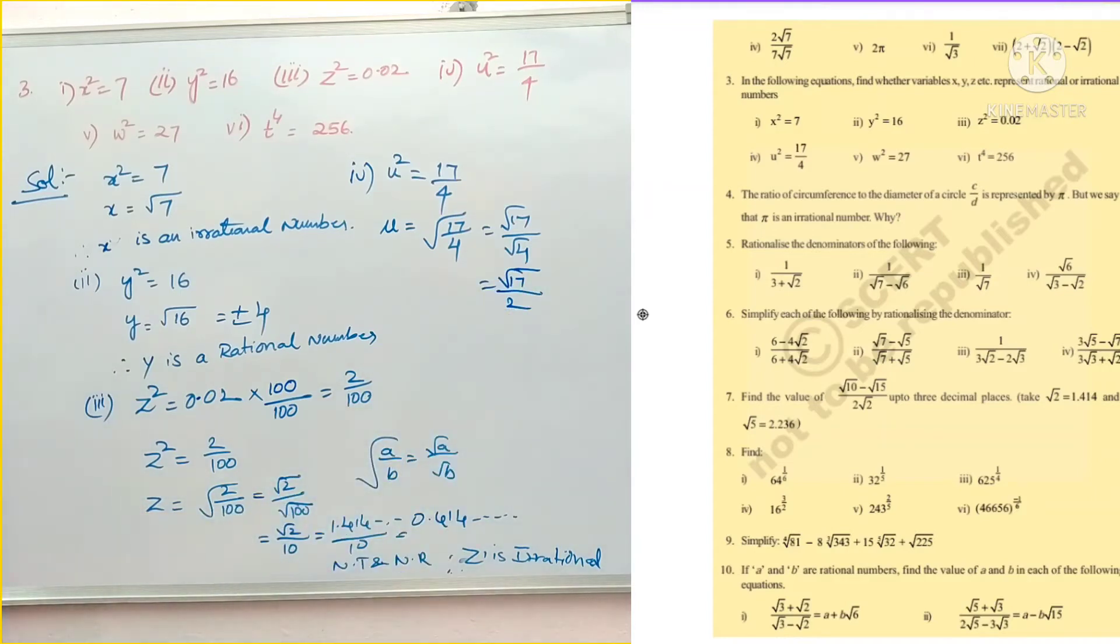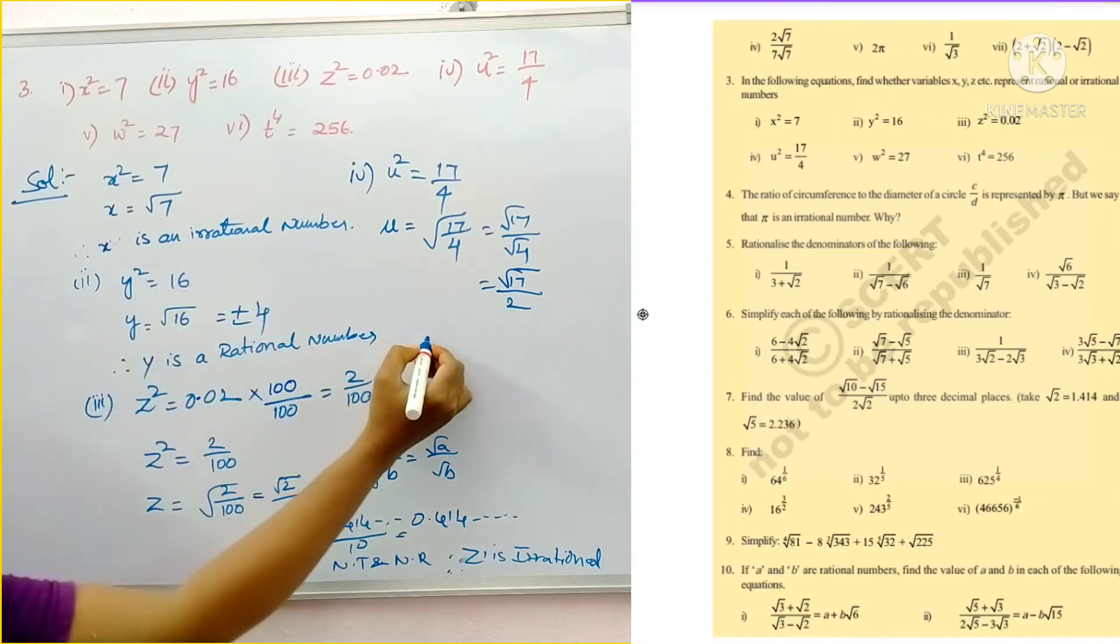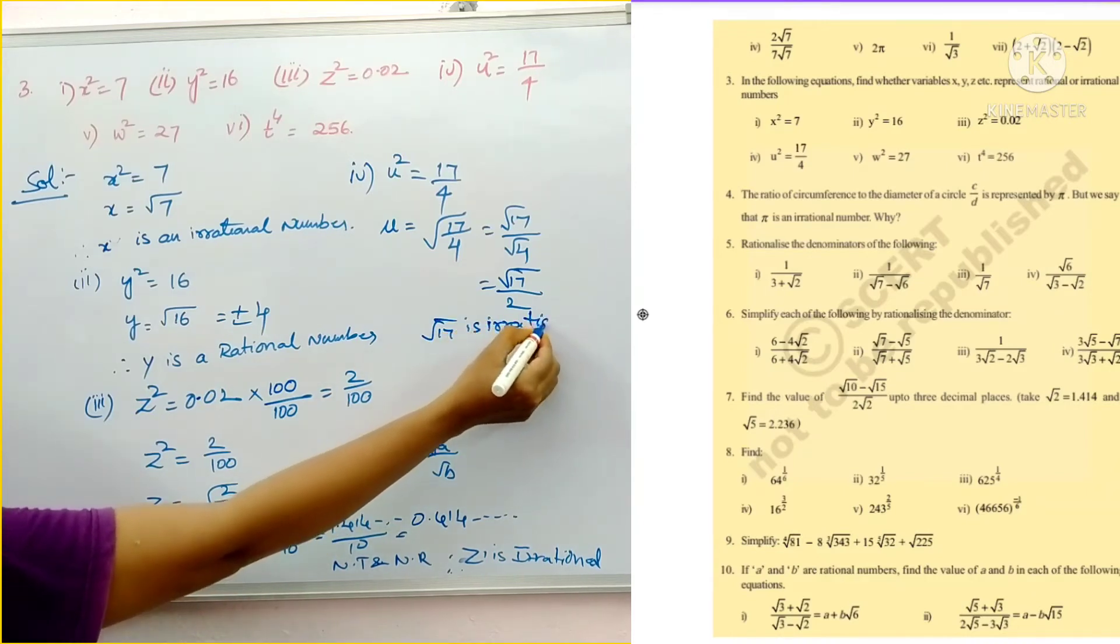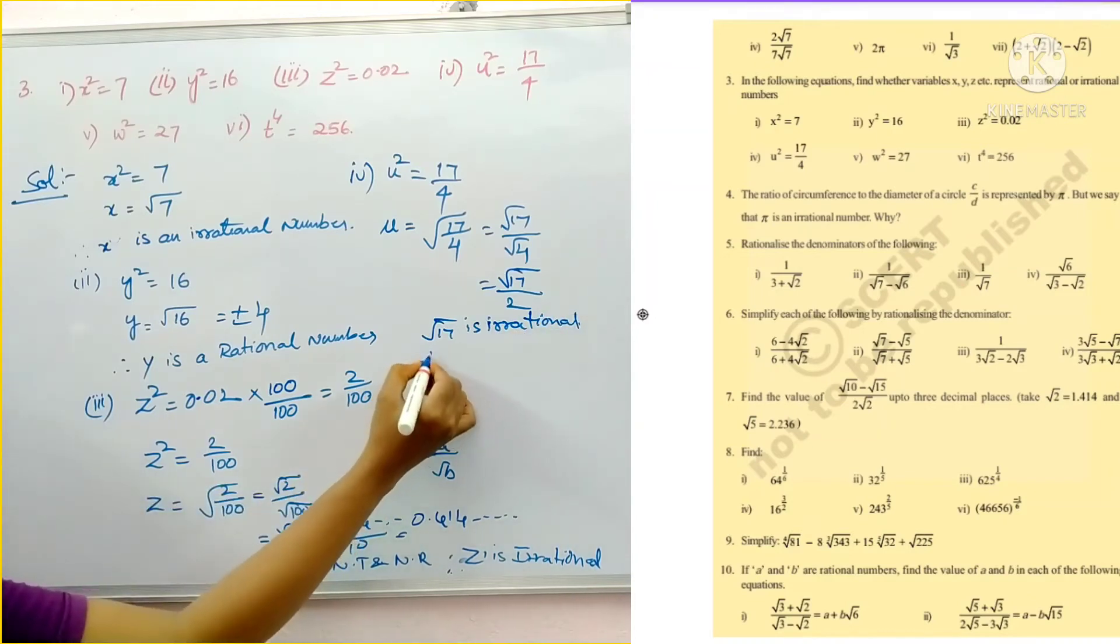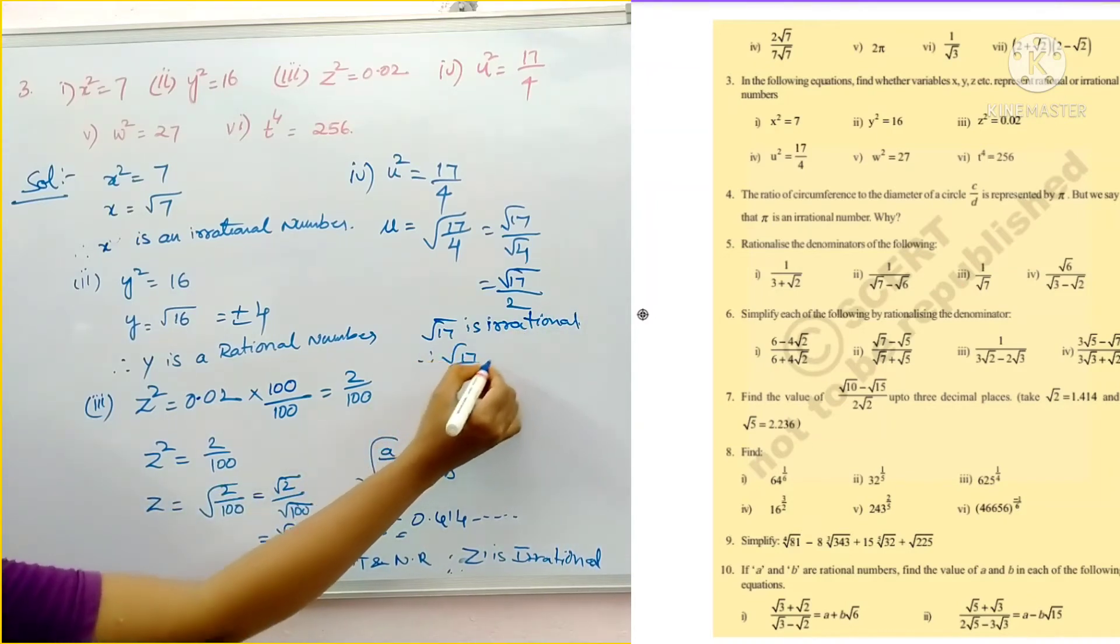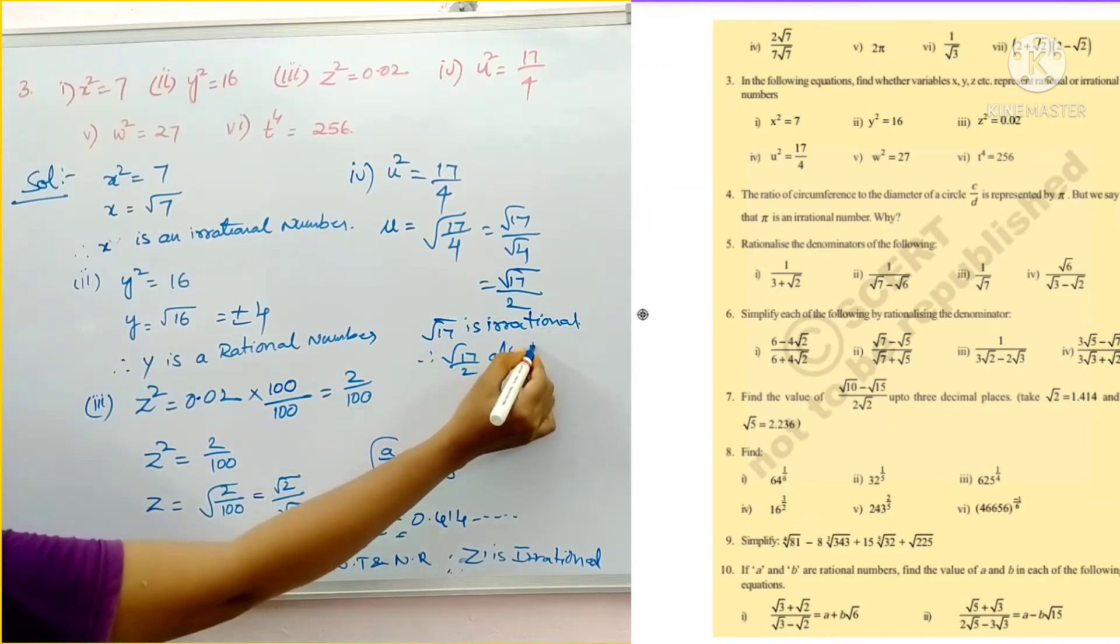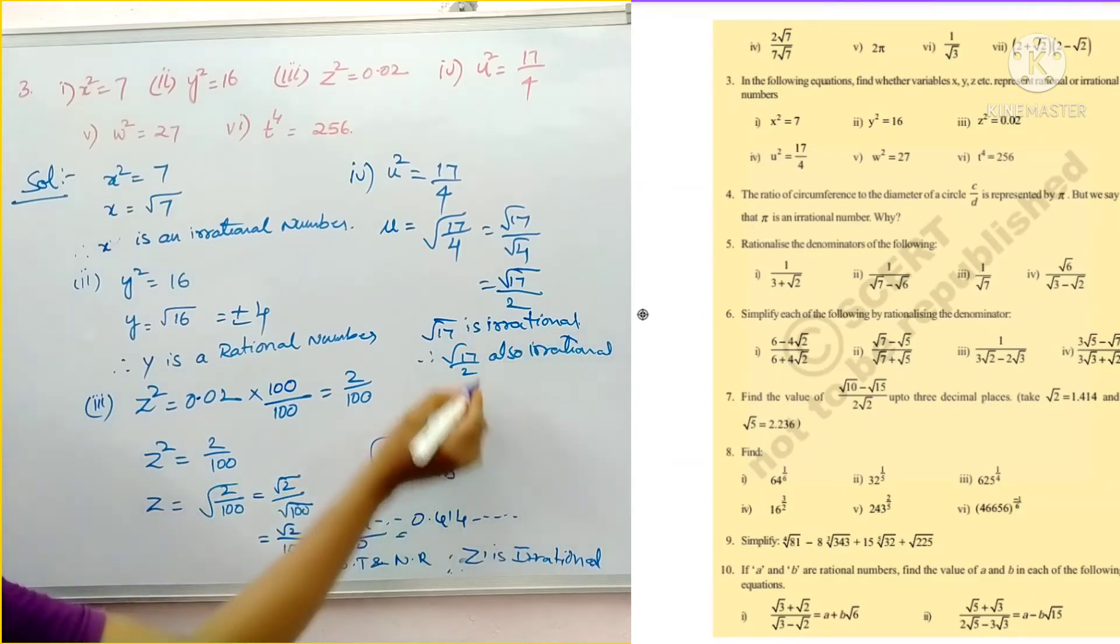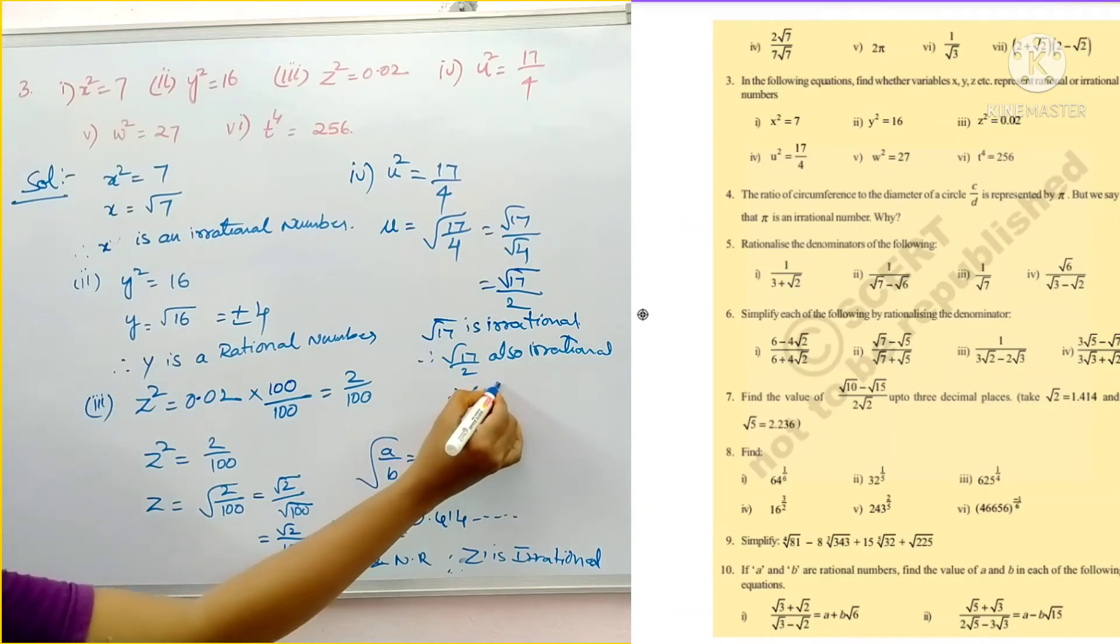So root 17 by root 4, 2. So root 17 is irrational number. So root 17 by 2 also irrational number. Therefore u is irrational.